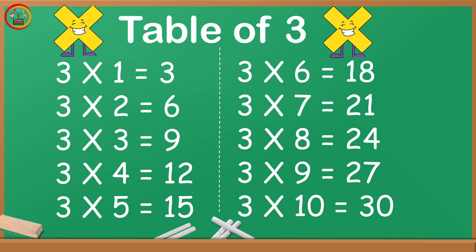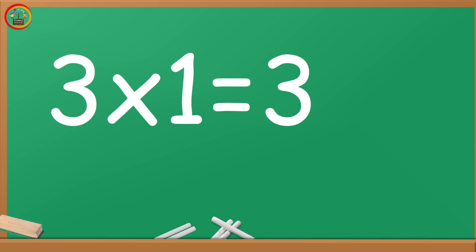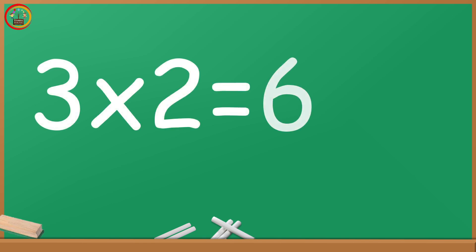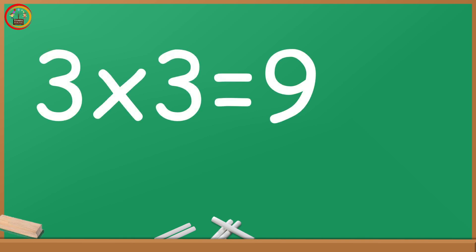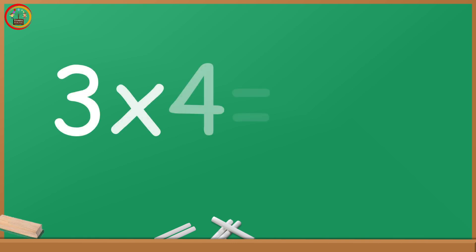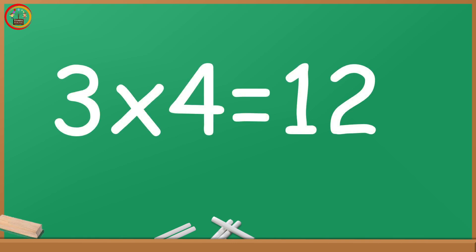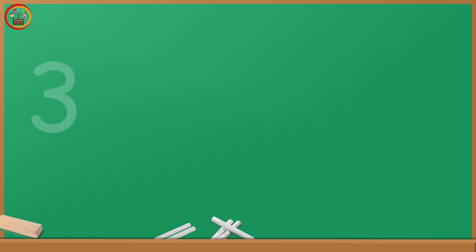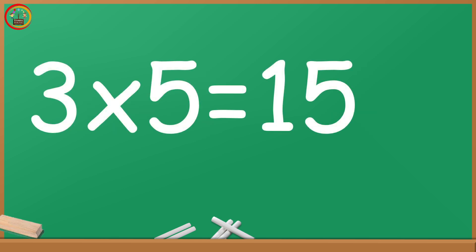Table of 3, let's start. 3 1's are 3. 3 2's are 6. 3 3's are 9. 3 4's are 12. 3 5's are 15.